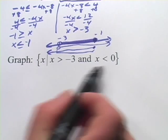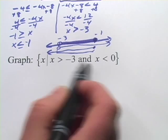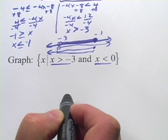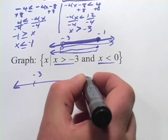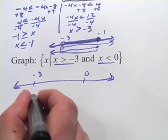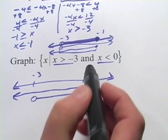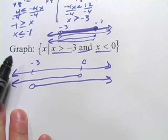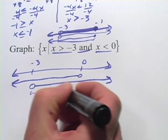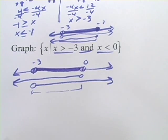This next one has slightly different notation — set notation: x where x is greater than negative 3 and x is less than 0. We don't have to do any solving because both parts are already solved for x. Our points of interest are negative 3 and 0. X greater than negative 3 is an empty circle stretching that way; x less than 0 is another empty circle stretching that way. Because it says 'and' — just like the compound inequalities above — we want where they both overlap, so we graph that region between the two open circles.